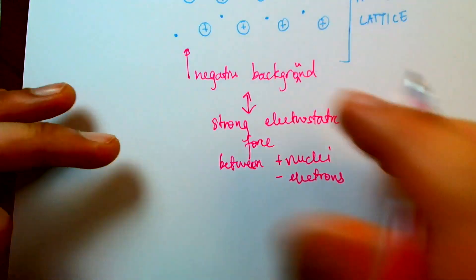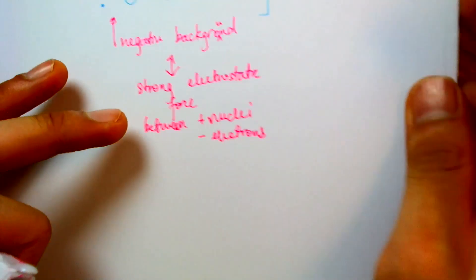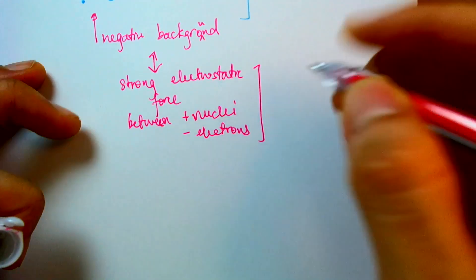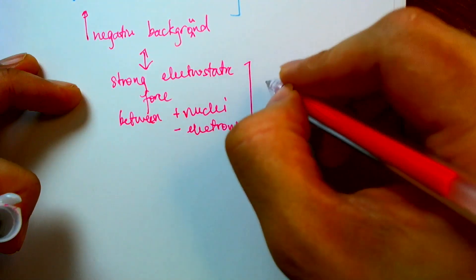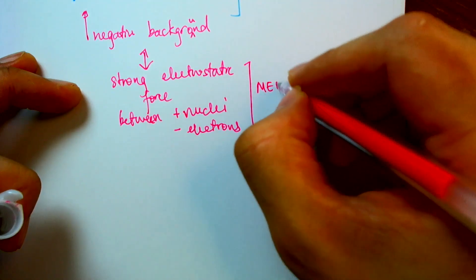It's just these electrostatic forces between the positive ions and the electrons. So this is what we call a metallic bond.